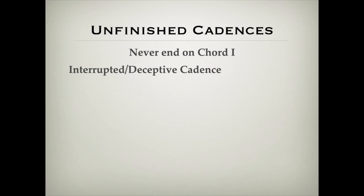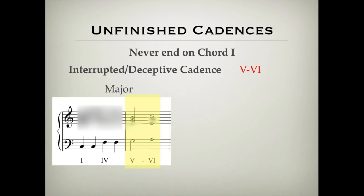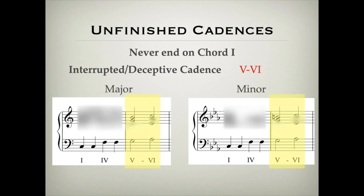The second type of unfinished cadence is the interrupted or deceptive cadence. This is a wonderful cadence — the clue's in the name, it's a surprise. Something happens that you're not expecting. This goes from chord V, usually to chord VI. The listener is often expecting it to go from chord V to chord I — expecting the perfect cadence — but instead they get this surprising sound. In the minor key, chord VI is actually a major chord, and so you get this wonderfully distinctive interrupted and deceptive sound.